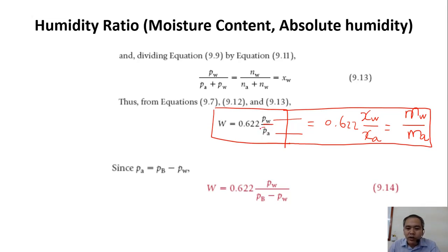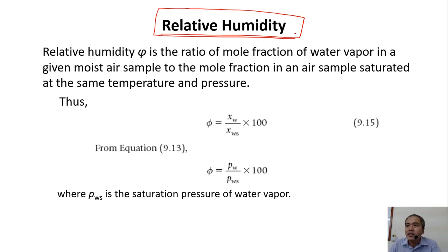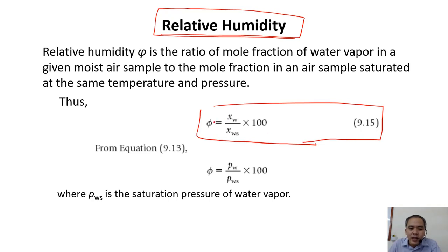Now we go to relative humidity, which we actually see a lot when we talk about food technology, especially when we talk about drying. Relative humidity is very important. Looking at the equation, relative humidity is the mole of water vapor of a specific moist air that we are looking at, divided by the mole of water vapor of that air at saturated condition. S means saturated condition of that air.